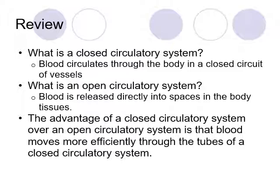There's a big advantage in having a closed circulatory system because blood moves more efficiently through the tubes. It's sort of like if you have water running through a hose and put your thumb over it — it makes the water spray out further because it's under more pressure. Our circulatory system has the blood under more pressure, getting it around to all our different organs more efficiently than something like an insect with an open circulatory system.